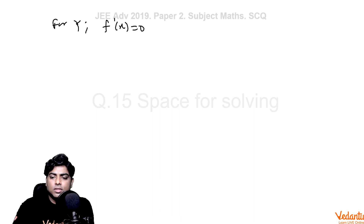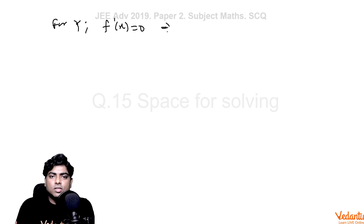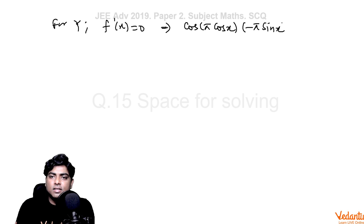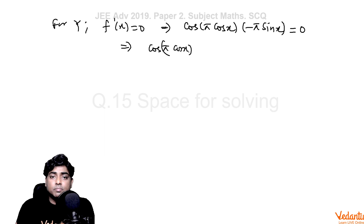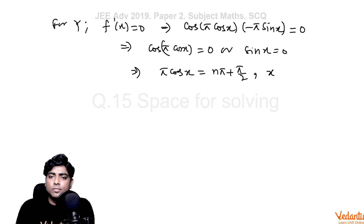For set Y, we solve f'(x) = 0. By the chain rule, the derivative of sin(π cos x) is cos(π cos x) · (−π sin x) = 0. This means either cos(π cos x) = 0 or sin x = 0. cos θ = 0 means θ = nπ + π/2, and sin x = 0 means x = nπ.